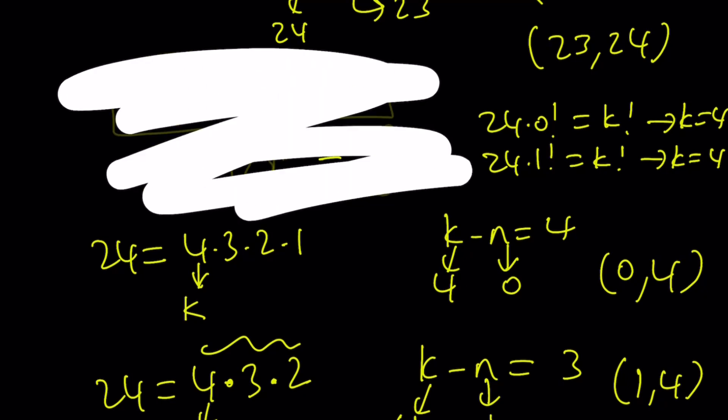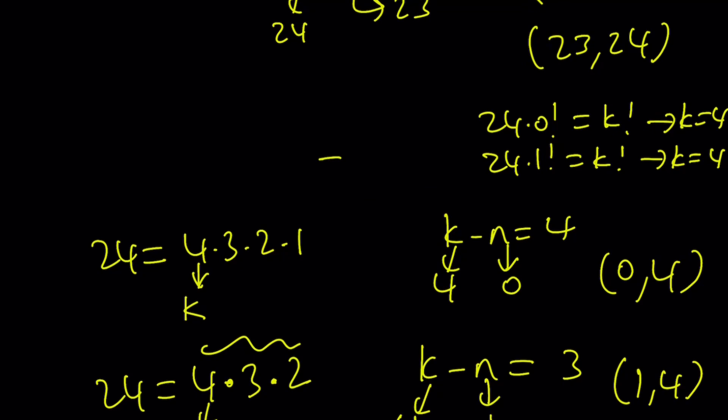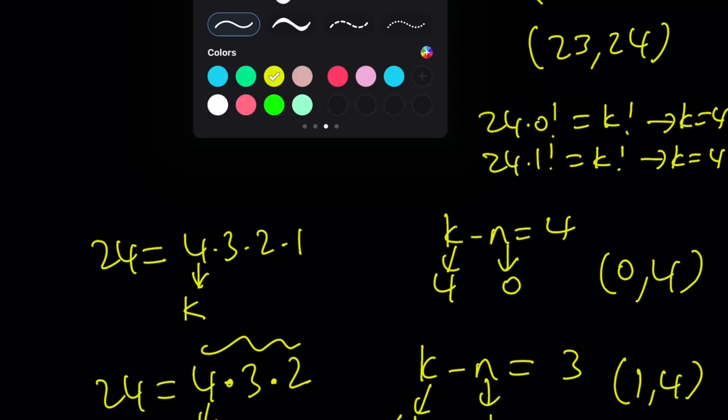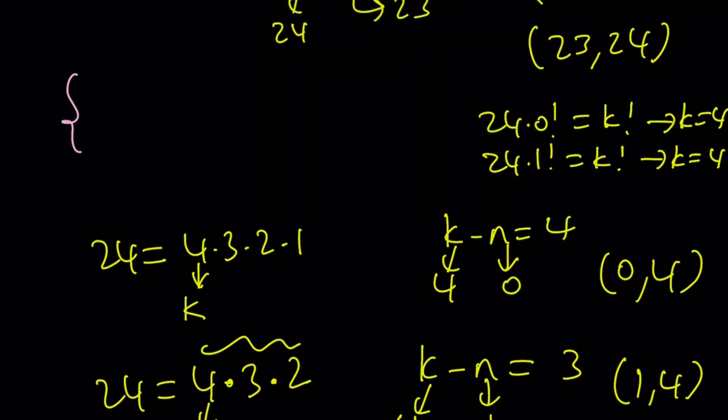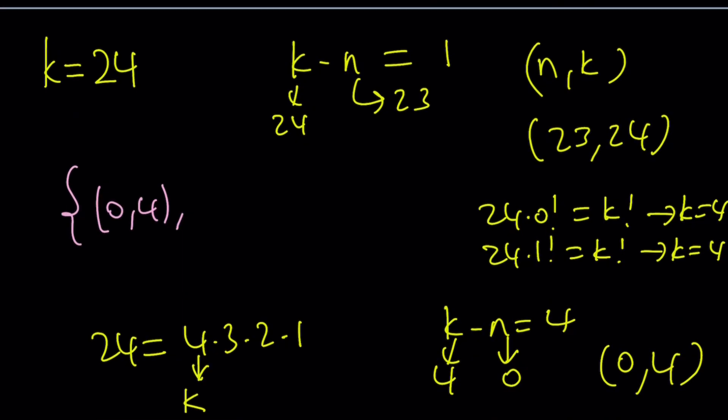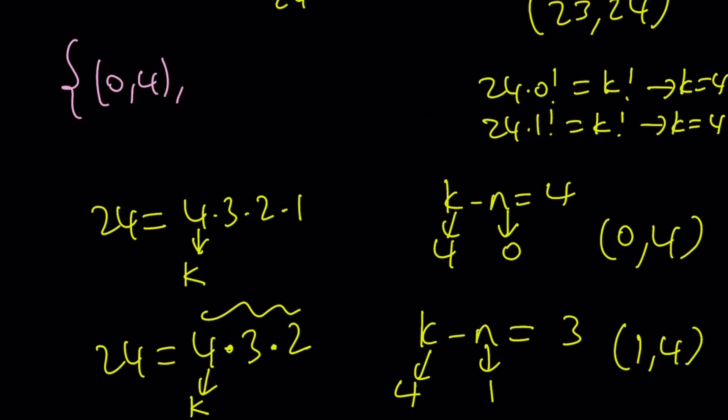And to summarize everything we have so far, let's write down all the solutions together. We got 0 comma 4, 1 comma 4, and 23 comma 24. And there are three solutions to this equation.